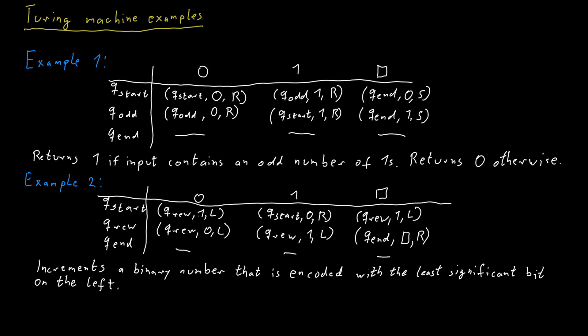Having the least significant bit on the left is maybe an encoding you have not seen as much before. And of course, we could also construct a Turing machine that would solve the same problem, but where the encoding would be in such a way that the least significant bit would be to the right.